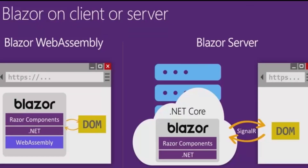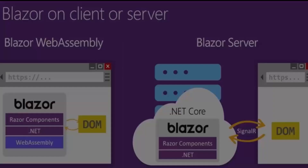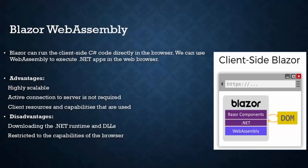In the past, if we wanted to create an application that ran in the browser, we were forced to use JavaScript. Now with Web Assembly, we can use other programming languages in the browser. With Blazor Web Assembly, we can run C-Sharp code directly in the browser. In fact, we can use Web Assembly to execute .NET applications in the web browser.